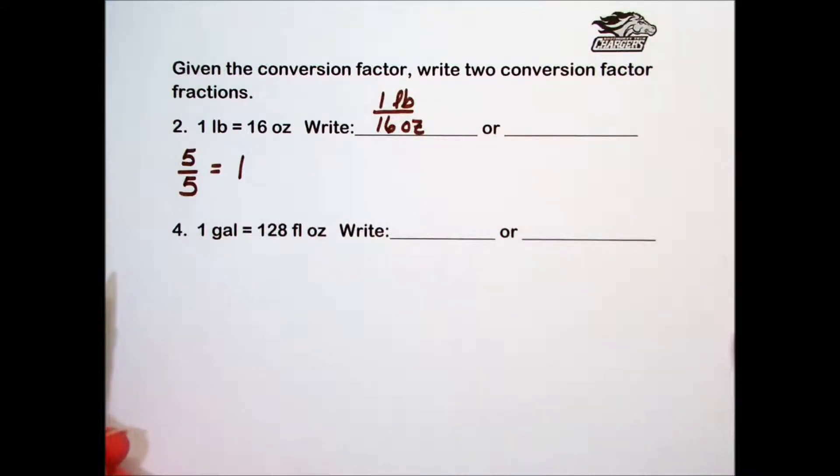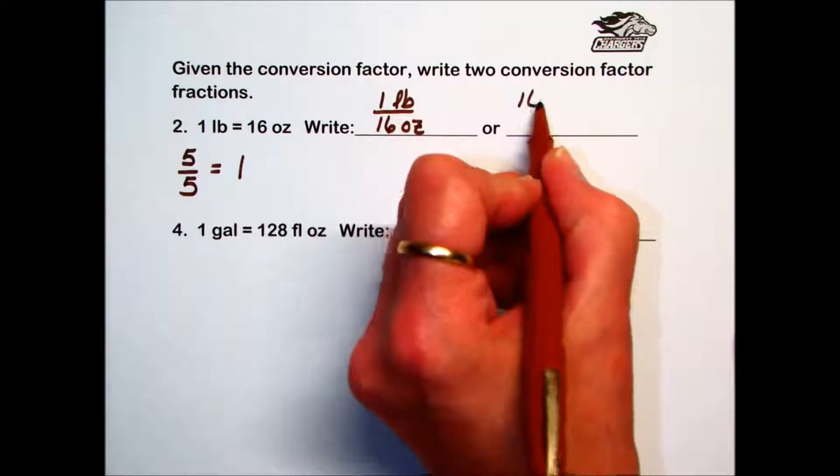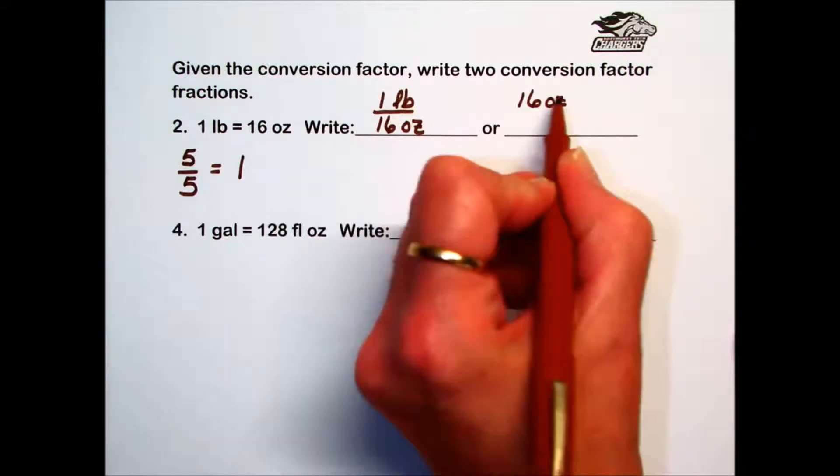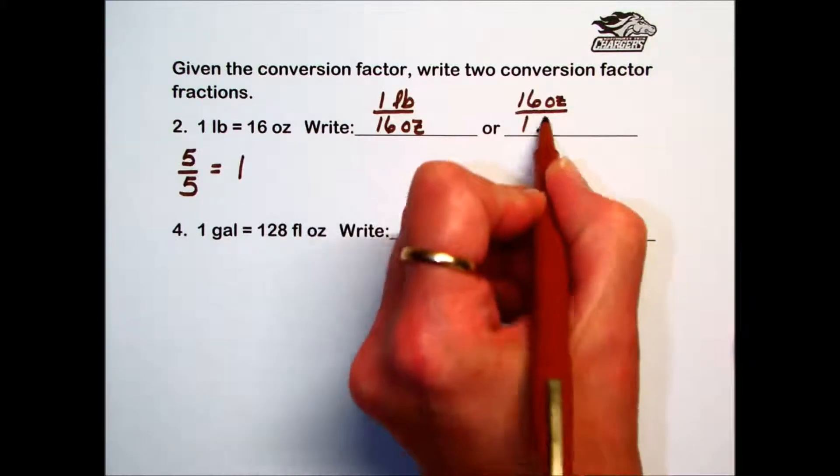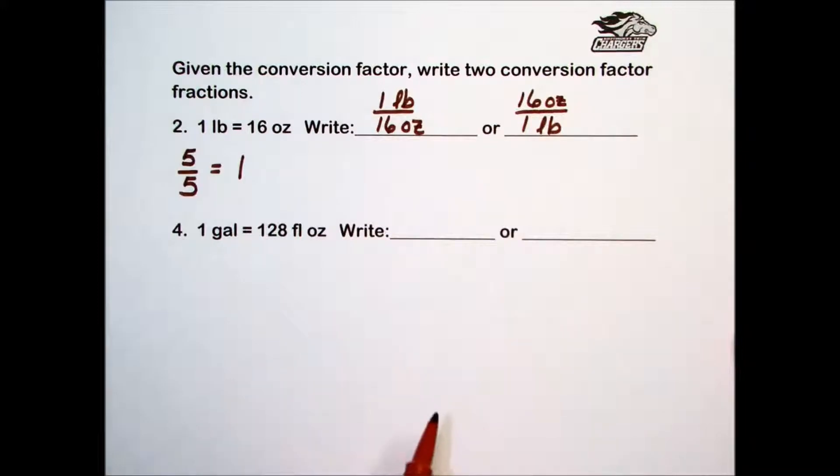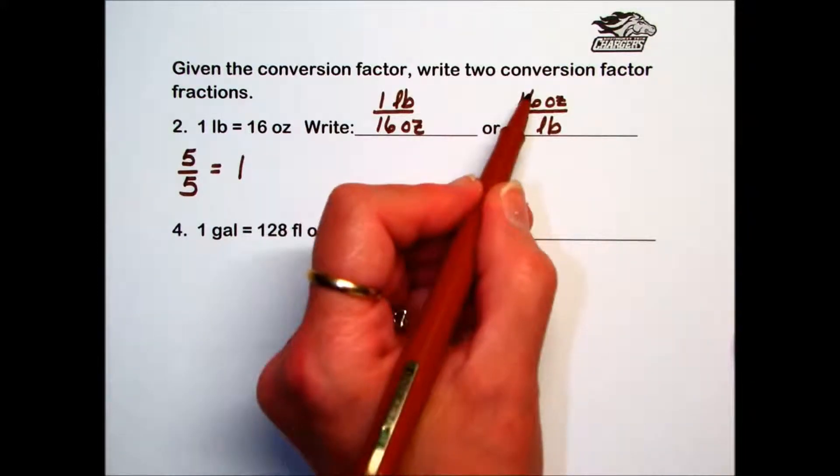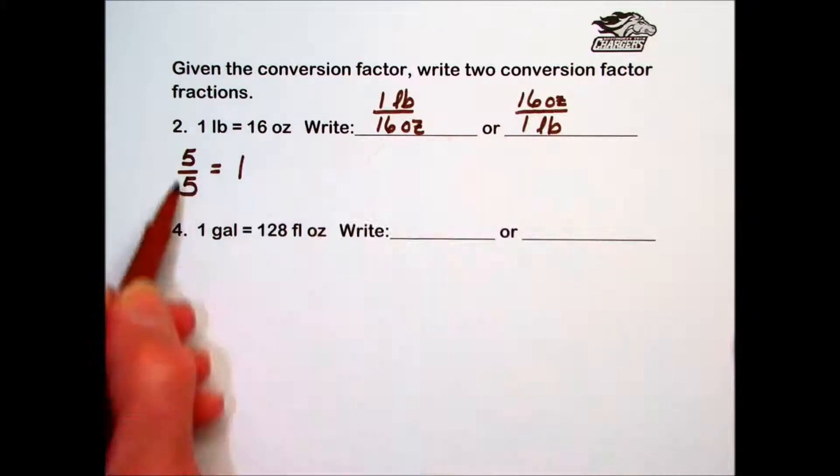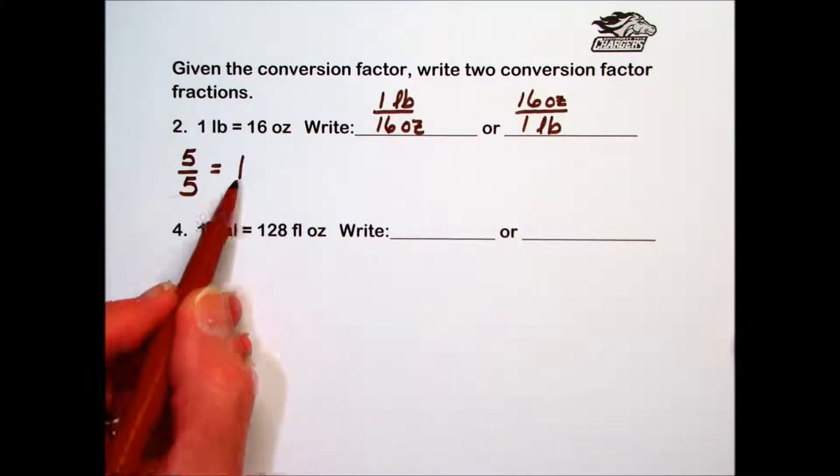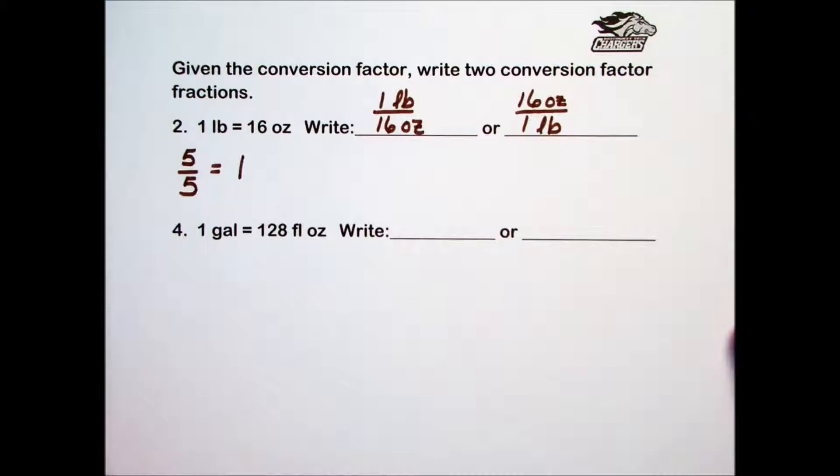While there was nothing special about putting the 1 pound on top and the 16 ounces in the denominator, I could have just as easily put 16 ounces in the numerator and the 1 pound in the denominator. This also would be equal to 1, since equal things over one another are equal to 1. They will allow us to do some converting in the next couple sections.